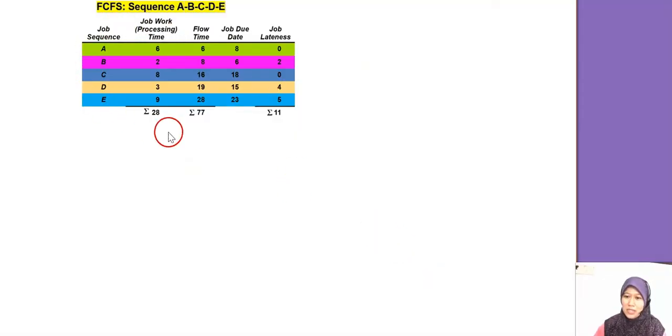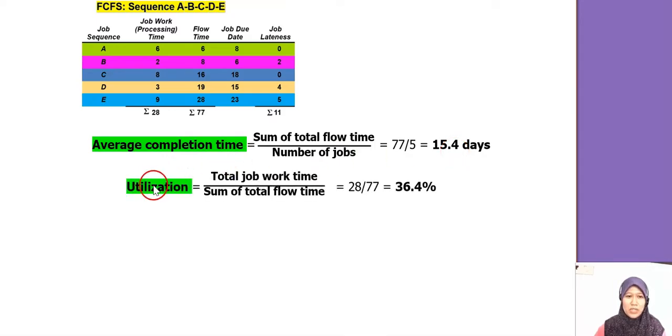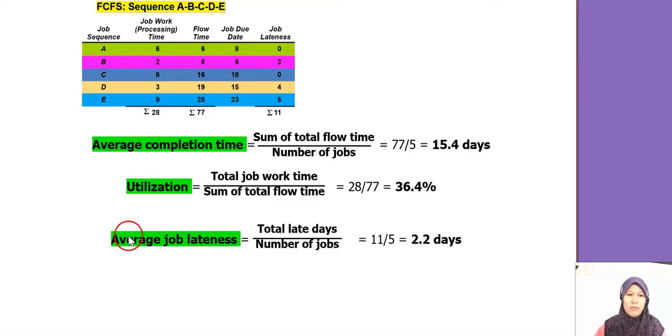From this information that we've done, we need to do the calculation for the average completion time. The formula is sum of total flow time, 77, divided by number of jobs. We have 5. So we have 15.4 days. For utilization, the formula is total job working time, 28, divided by sum of the total flow time, 77, and then times 100. We have 36.4% of utilization. Now we look at the average job lateness. So we have 11 divided by 5 jobs. So we have 2.2 days. So this information, we're going to compare with all other rules.